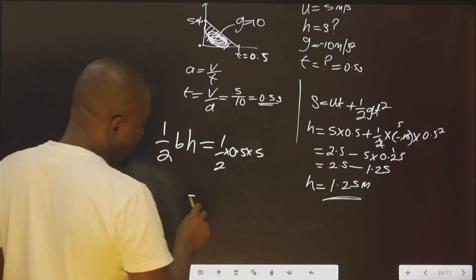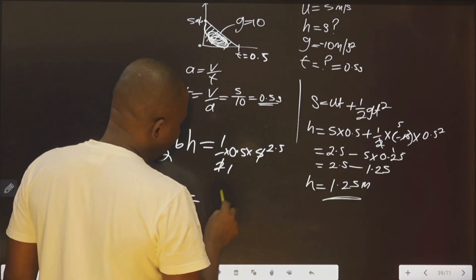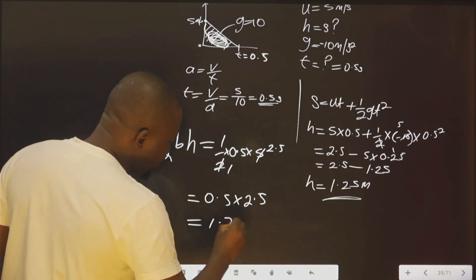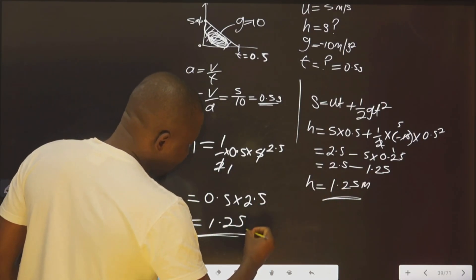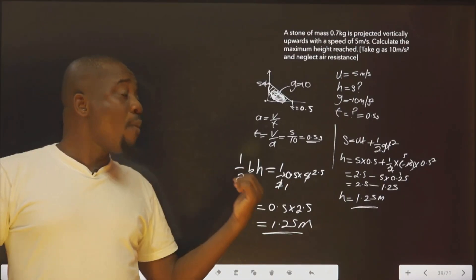It means, therefore, if you cancel this, you have 2.5 or 0.5 multiplied by 2.5. If you solve this, I am going to have 1.25. Just like this one. So any of them, you are good to go. I hope this is understood.